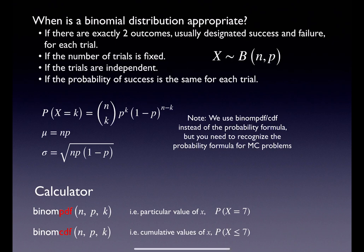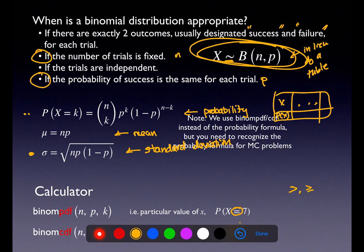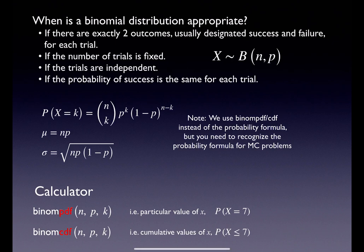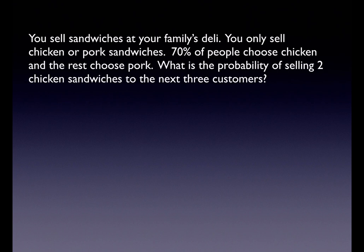Use binomial CDF when you have cumulative values and the inequality is less than or equal to. We do not have a calculator command for strictly greater than, greater than or equal to, or strictly less than. For those cases you have to combine a PDF and a CDF — especially for greater than situations, using binomial CDF in conjunction with the complement rule: one minus some probability like P(X ≤ k).